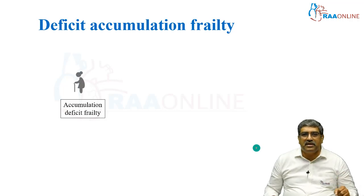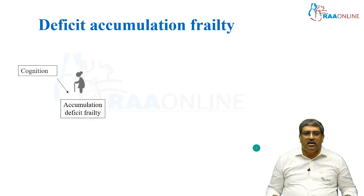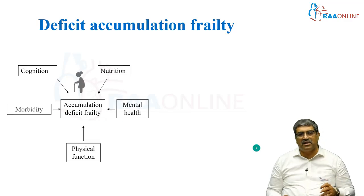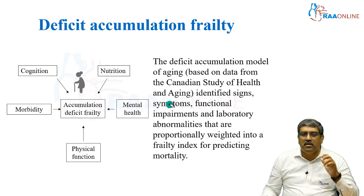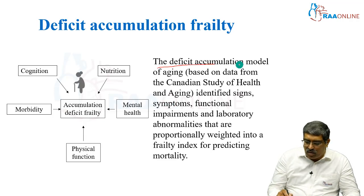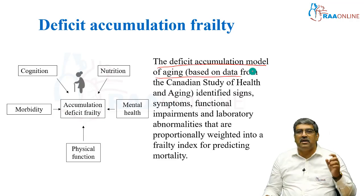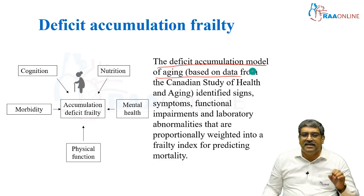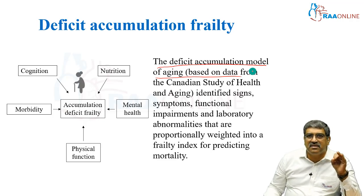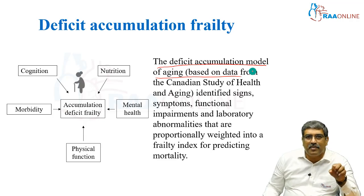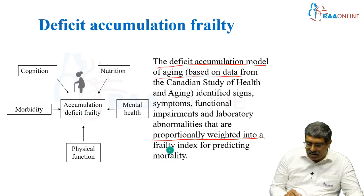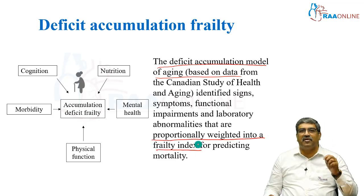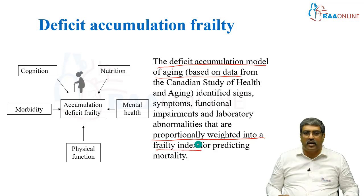Coming to the deficit accumulation frailty model, here you look at cognition, nutrition, mental health, physical function, and morbidity. This deficit accumulation model of aging is based on data from the Canadian Study of Health and Aging. They identified signs, symptoms, functional impairment, and laboratory abnormalities that are proportionally weighted into a frailty index for predicting mortality.